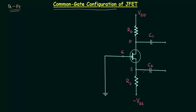We are calling this configuration common gate configuration because the gate is common to the input side and also to the output side. The input signal VI is applied to the source terminal and the output signal is taken at the drain terminal. You can clearly see gate is common to the input side and also to the output side.